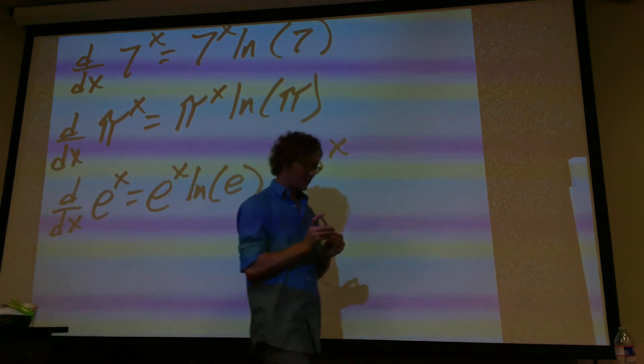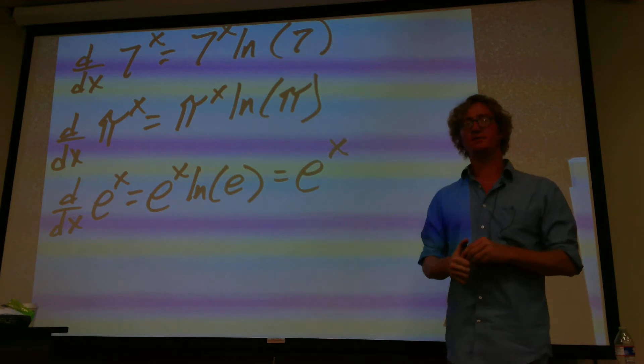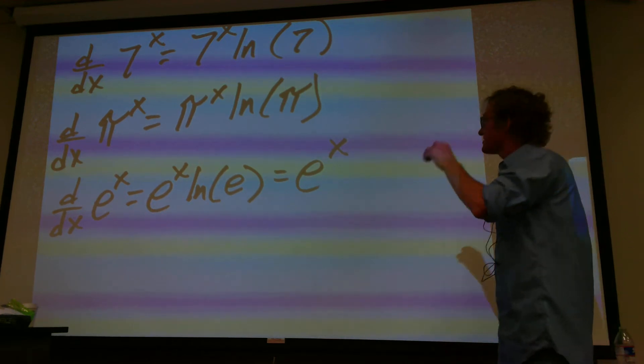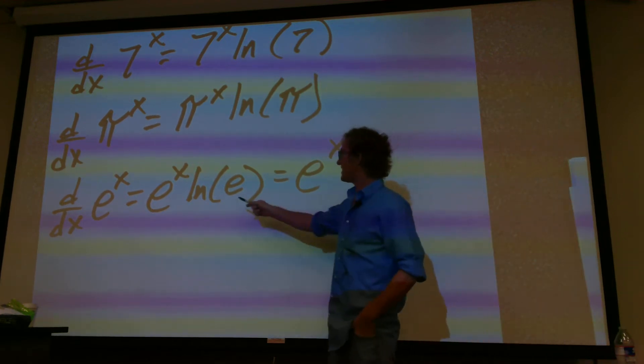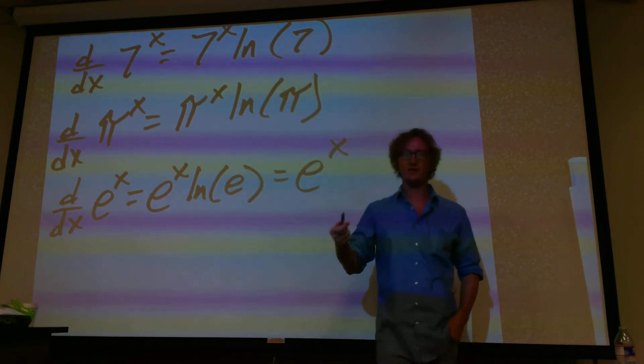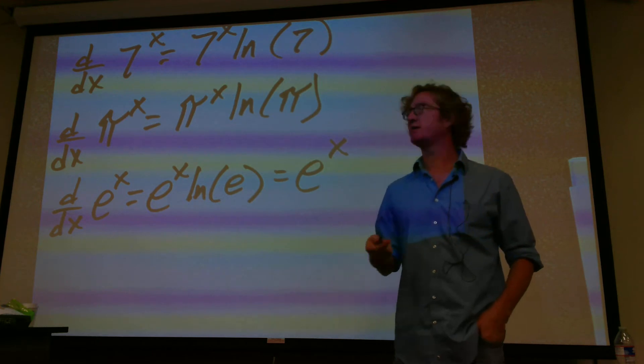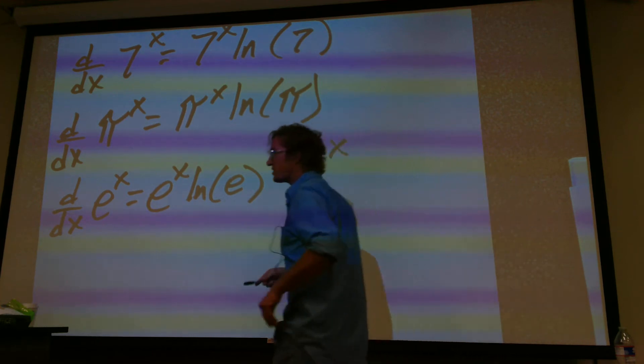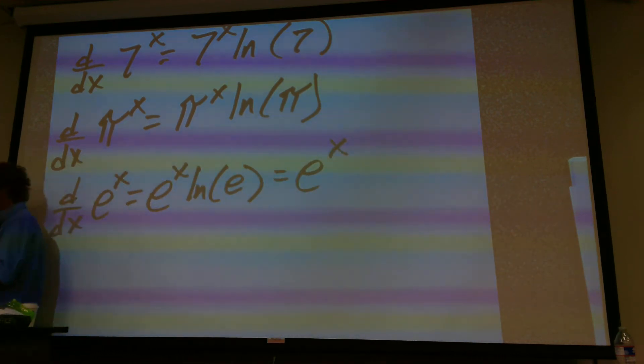And if you want to think about it in this sense. So, the natural log is the inverse function of e to the x. So, if you say, well, what is the natural log of e to the 1? Well, the natural log undoes the e and it just turns it into a 1. So, you can say, well, yeah, that's e to the x times 1.